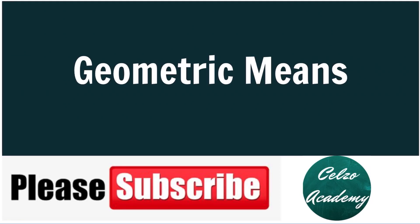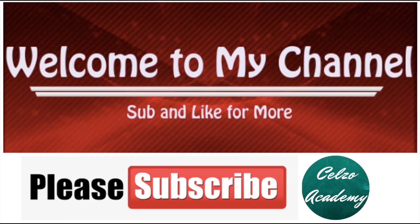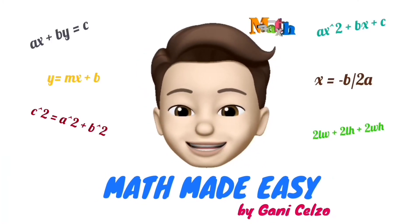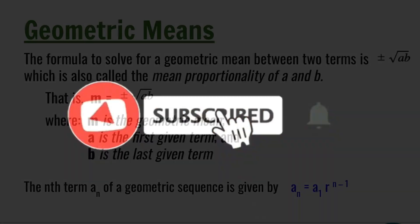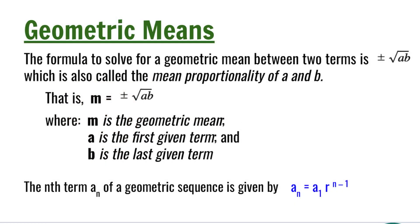Do you know how to solve for the geometric means? That's what we're learning for today's lesson. The formula to solve for a geometric mean between two terms is plus or minus the square root of ab, which is also called the mean proportionality of a and b. So the formula for the geometric mean m is equal to plus or minus the square root of ab.